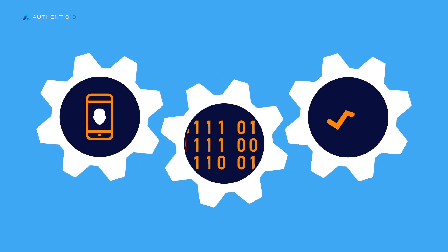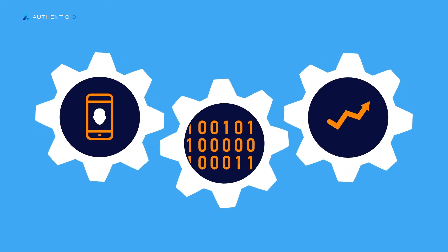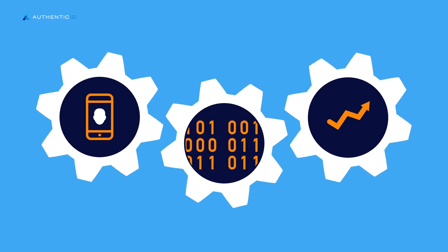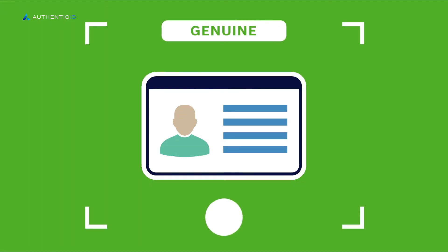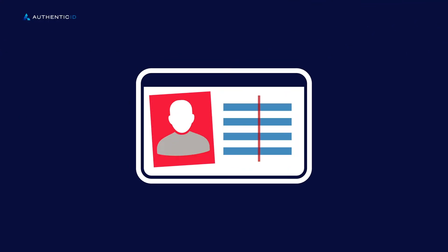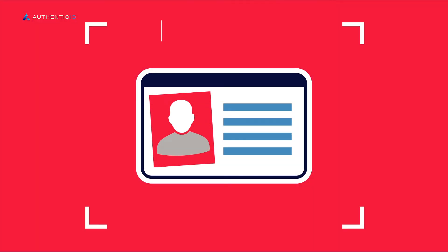AuthenticID has developed unique digital image integrity evidence technology that can detect tampered, deliberately altered and damaged documents instantaneously, guaranteeing the integrity of a digital identity document. This technology increases the velocity of identity systems by catching digitally tampered or altered examples before they are accepted for further processing.